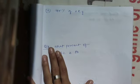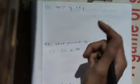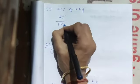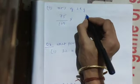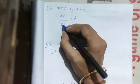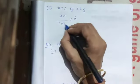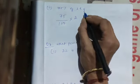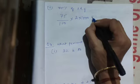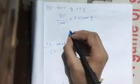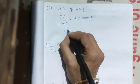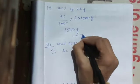Find 75 percent of 2 kg. Percent means divide by 100, 'of' means multiply by 2 kg. Convert 2 kg to grams by multiplying by 1000. Cancel two zeros: 75 times 2 is 150, and 150 times 10 is 1500 grams.